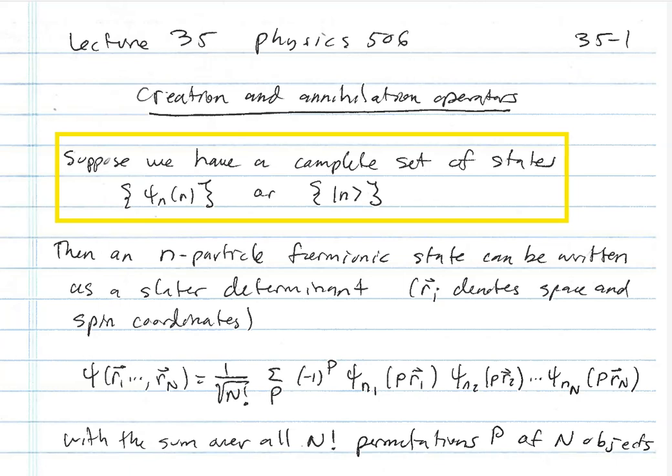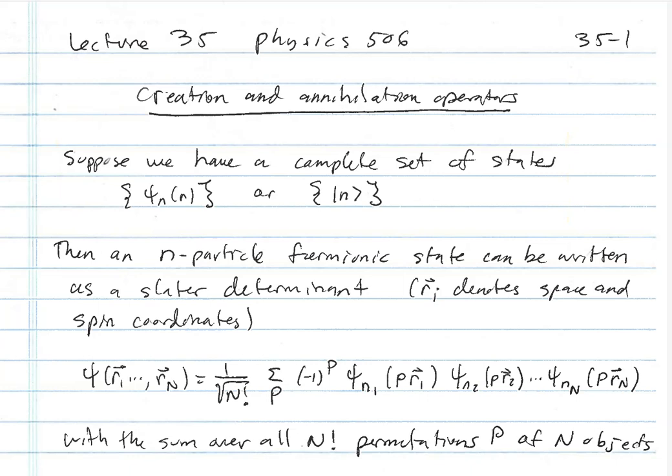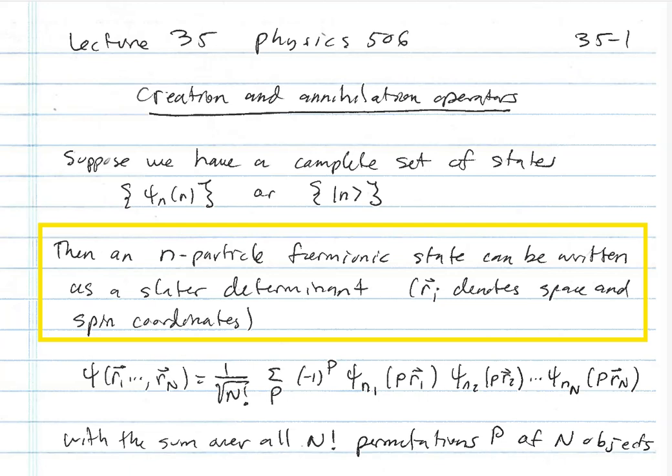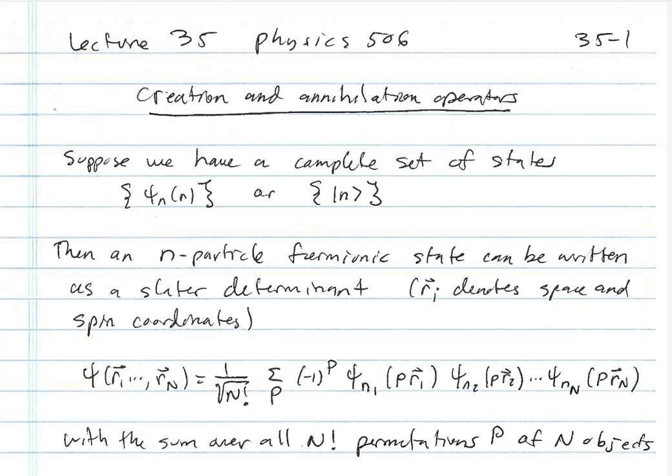In single quantization, we have a complete set of states indicated by the set psi_n of r, if we think in terms of position states, or just the set of kets labeled by some integer n for energy eigenstates. What we want to think about is how do we form many-body states — n-particle fermionic states — from those single particle states such that they maintain the important condition that fermionic states must have: that they're totally anti-symmetric.